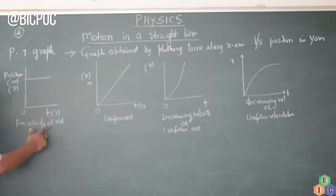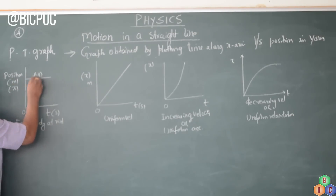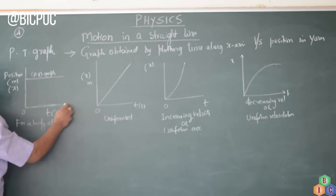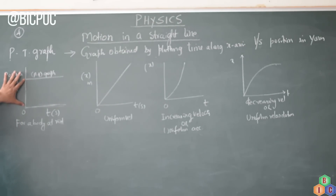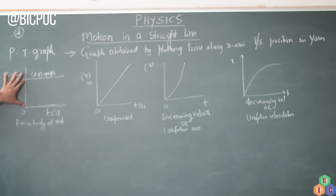For a body at rest, the PT graph is a straight line parallel to the time axis. Because its position is fixed — only time passes, its position does not change. So remember, the shape of the PT graph of a particle at rest is parallel to the x-axis.